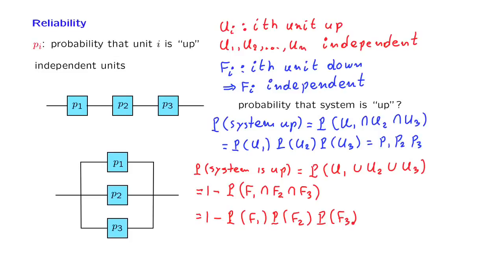And with the notation that we have introduced, using the pi's, this is as follows. The probability that unit 1 fails is 1 minus the probability that it is up. Similarly, for the second unit, 1 minus the probability that it is up, and the same for the third unit.